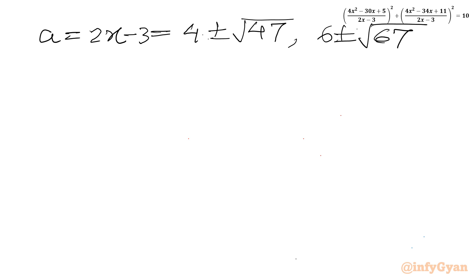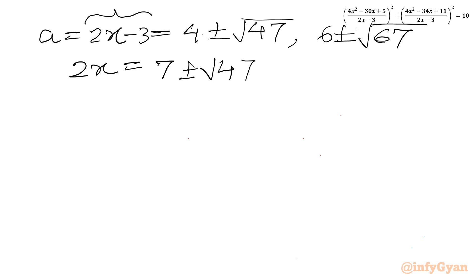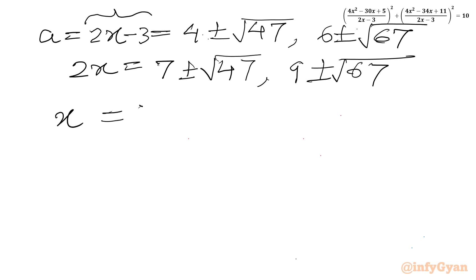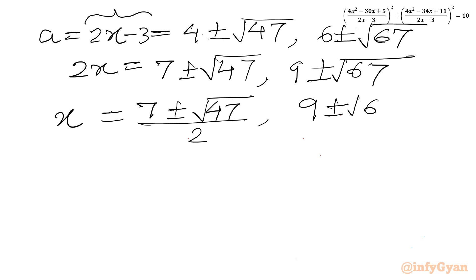Now a was our substitution 2x minus 3. So 2x minus 3 equals 4 ± √47, giving 2x equals 7 ± √47, and thus x equals (7 ± √47)/2. And from the second set: 2x minus 3 equals 6 ± √67, giving 2x equals 9 ± √67, and x equals (9 ± √67)/2.